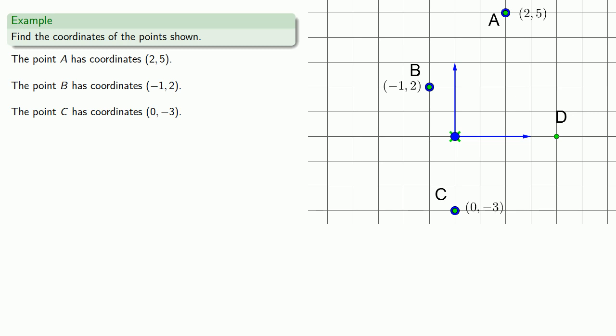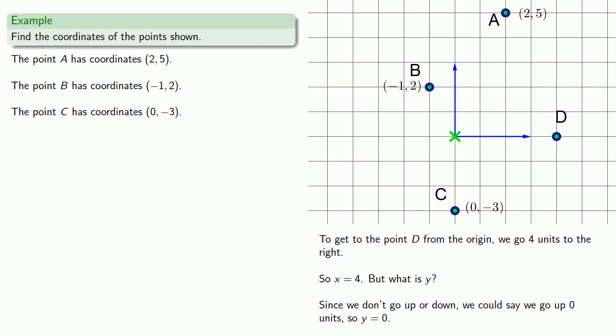Finally, to get to the point D from the origin, we go 4 units to the right, so x equals 4, but what is y? Since we don't go up or down, we could say we go up 0 units, so y is equal to 0, and so our coordinates will be (4, 0).